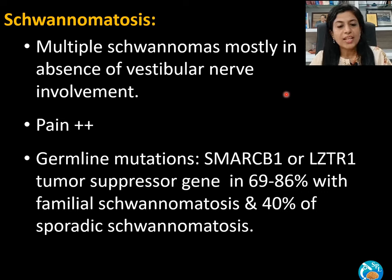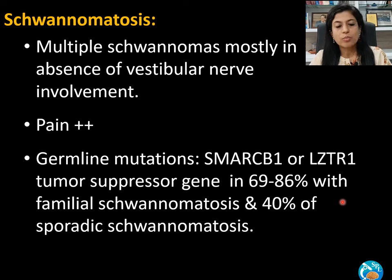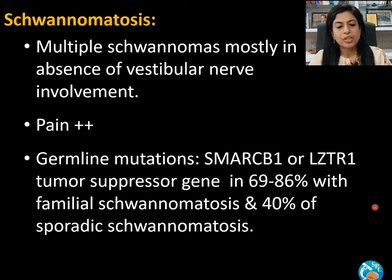Schwannomatosis is characterized by multiple schwannomas, mostly in the absence of vestibular nerve involvement. It is often associated with pain, and schwannomatosis shows germline mutations of either SMARCB1 or LZTR1 tumor suppressor genes in approximately 69–86% of patients with familial schwannomatosis and even 40% in sporadic schwannomatosis.